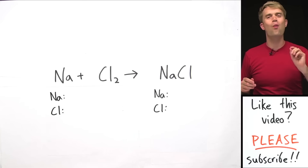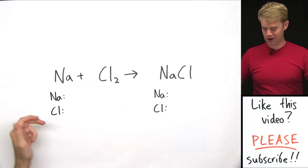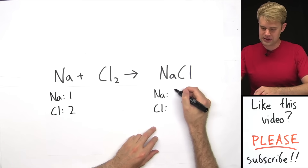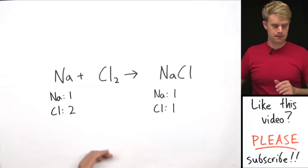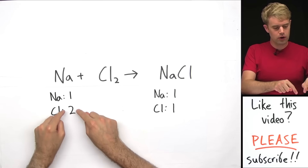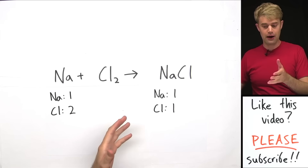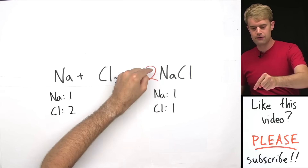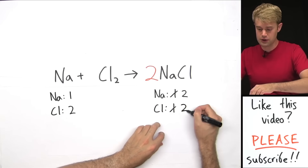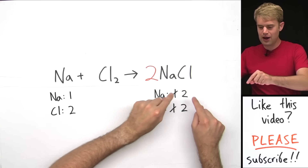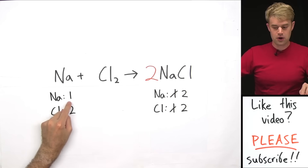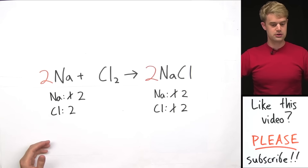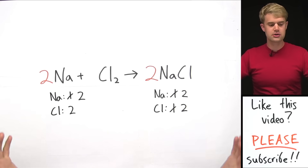Now we're going to start doing some equations that require more than one step to balance. This one has sodium and chlorine. Over here we have one sodium and Cl₂ giving two chlorines. Over here NaCl gives one sodium and one Cl. I have more chlorine on the left, so I put a two in front of NaCl, giving two Cl and two Na. Then to fix the sodium, I put a two in front of Na, giving two sodiums and two chlorines on both sides — the equation balances.